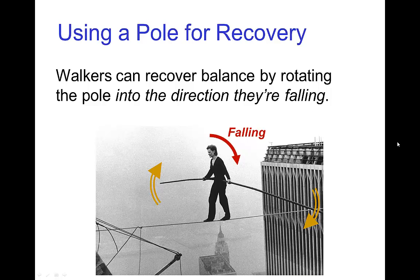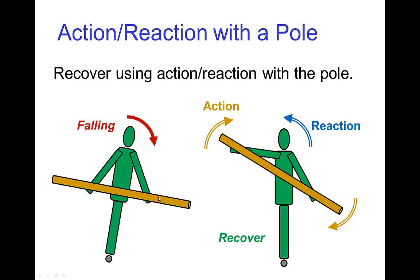But that's not the only use of the long pole. A long pole, especially when it's weighted on the ends, is useful for recovering balance. Using action-reaction, the walker can recover balance by rotating the pole into the fall. If the walker is out of balance and falling, they need something to push off against to shift their pose. They do that by pushing the pole into the fall — that's the action — and then there's a resulting reaction which rotates their body in the opposite direction.